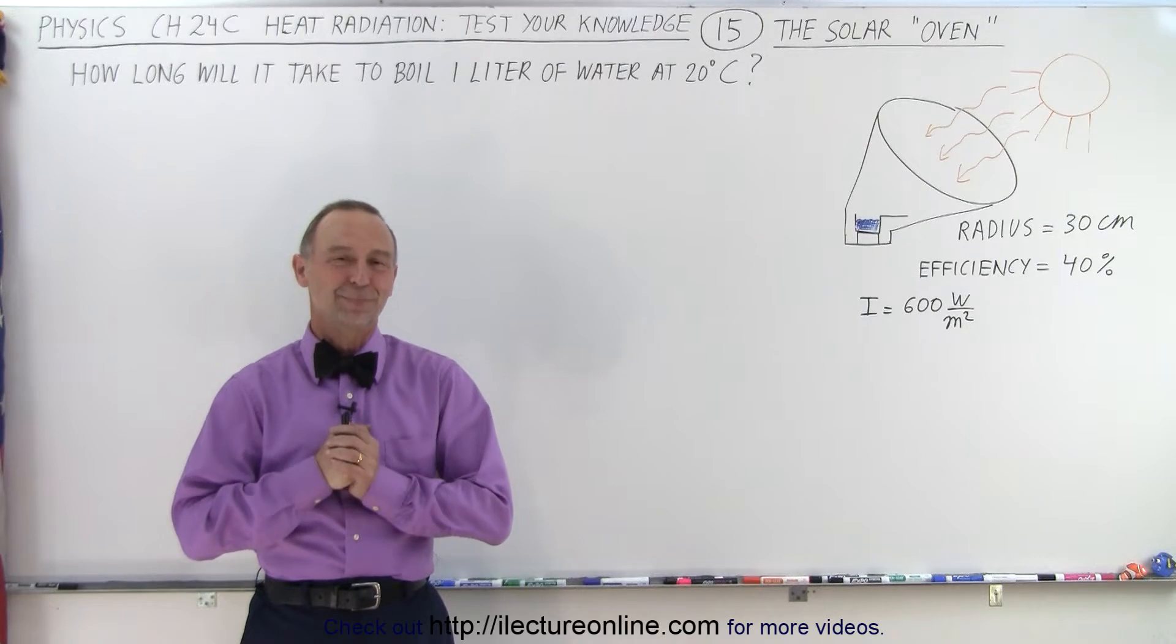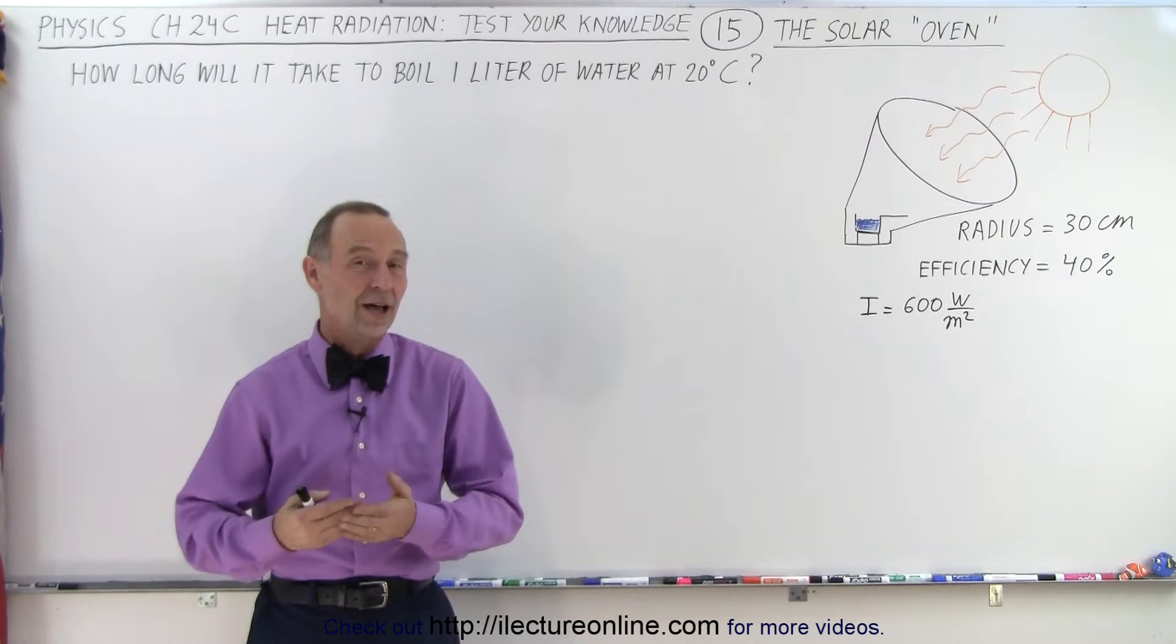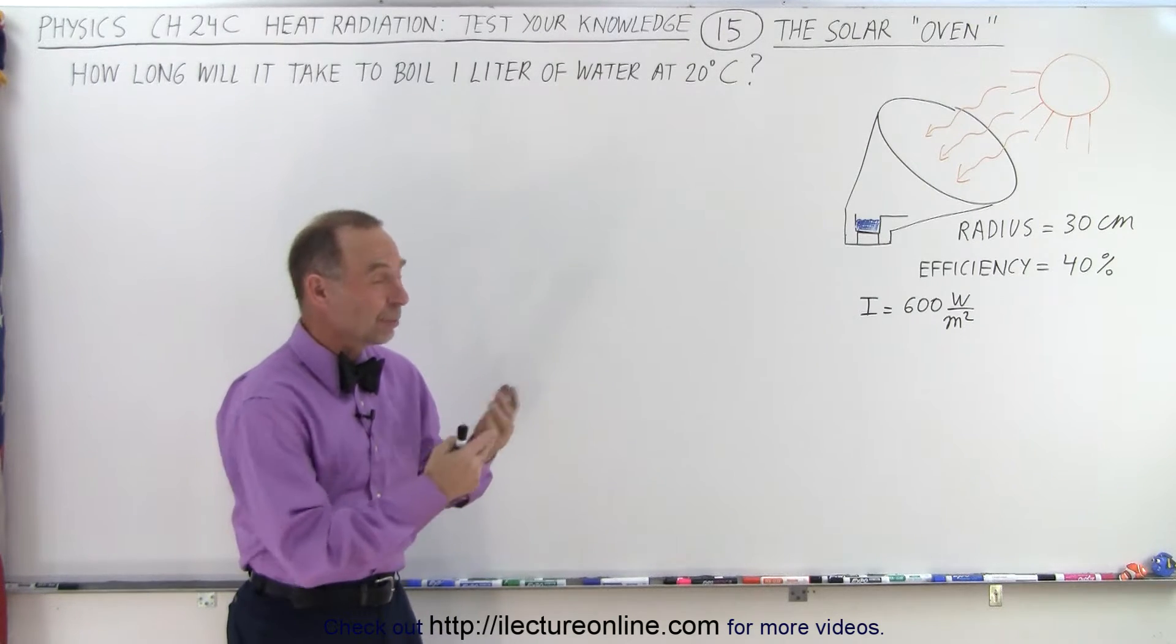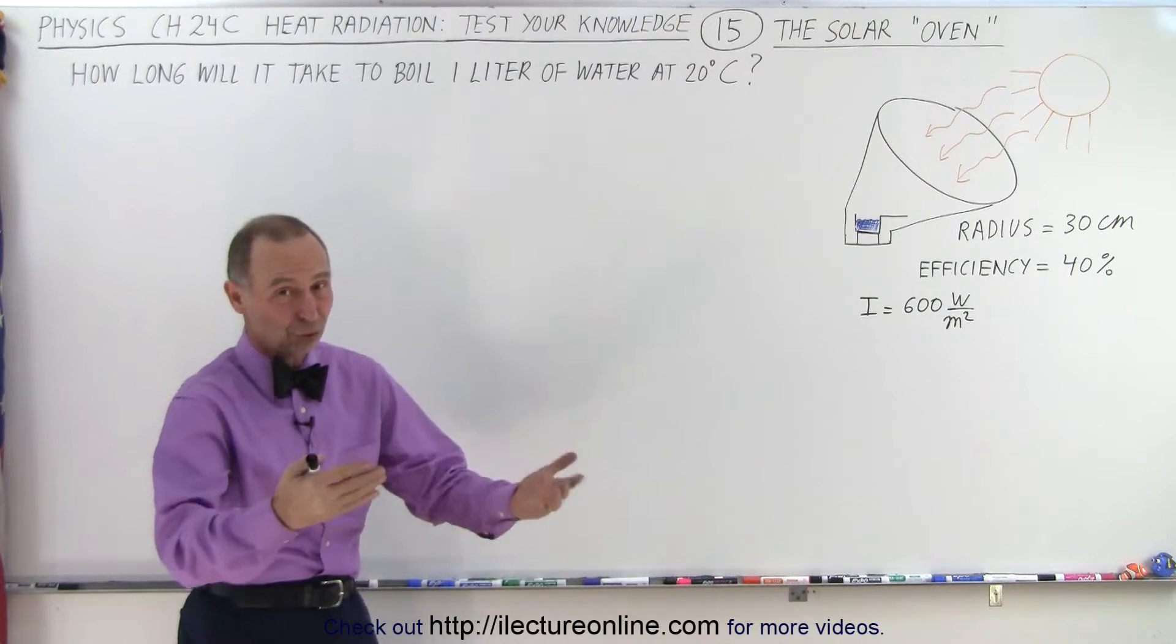Welcome to Electronline. As we're looking for ways to reduce our dependence on fossil fuels, we can come up with some inventions such as what we call the solar oven or perhaps a solar cooker.